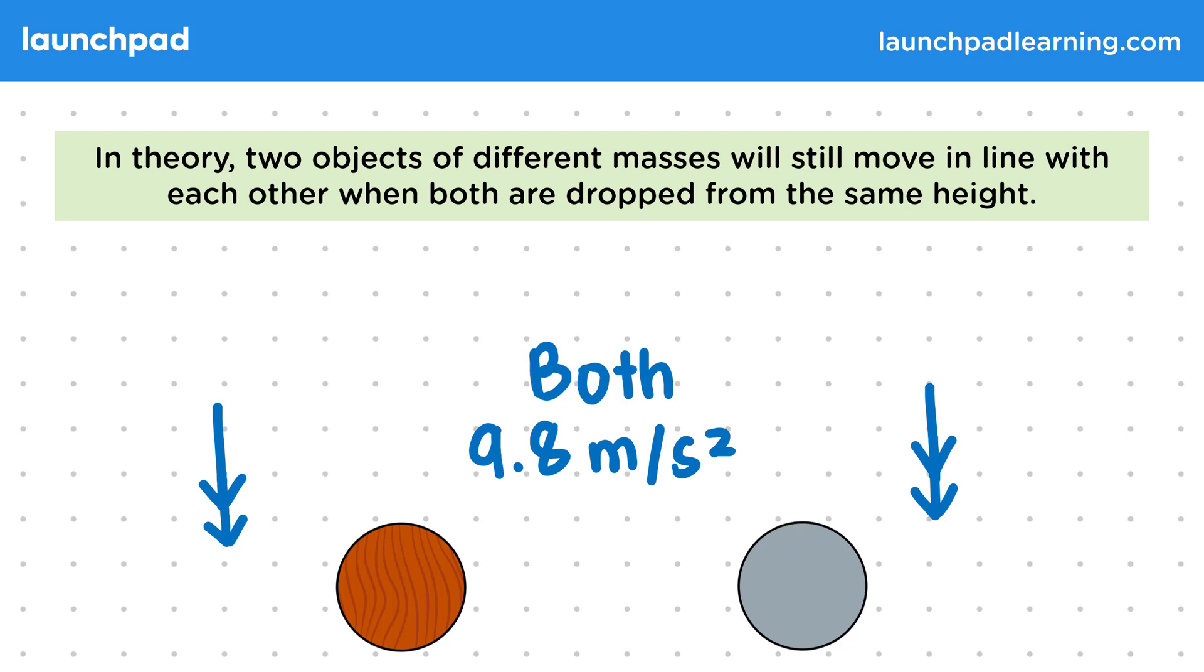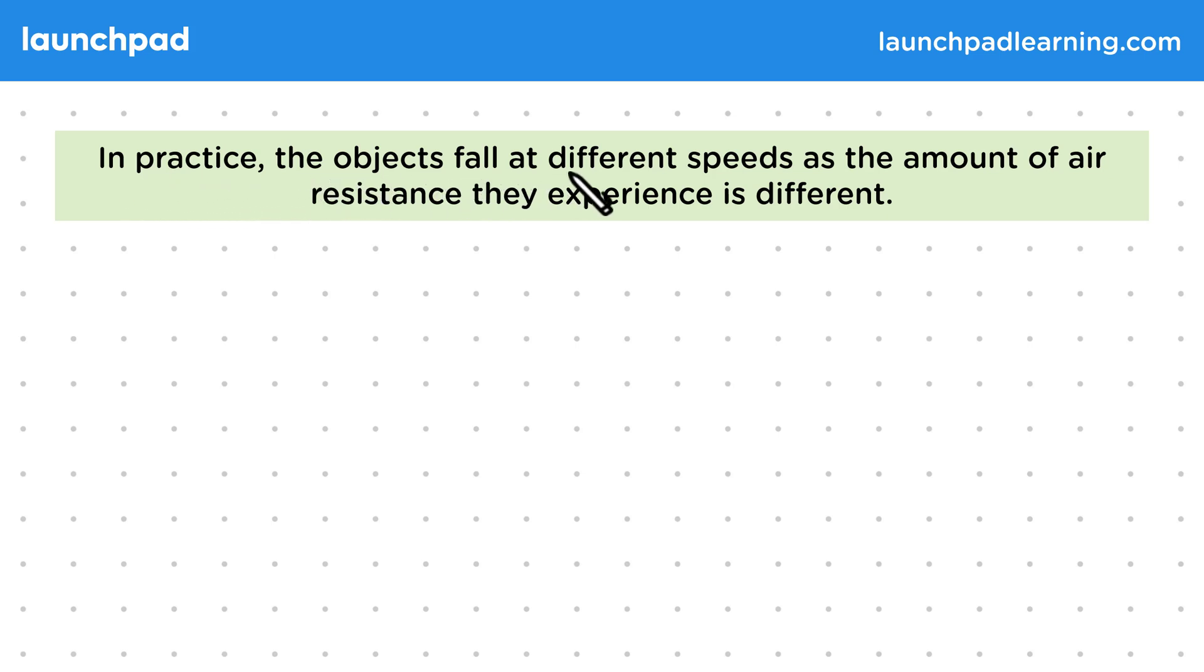But where does this misconception come from? In practice, the objects fall at different speeds as the amount of air resistance they experience is different.